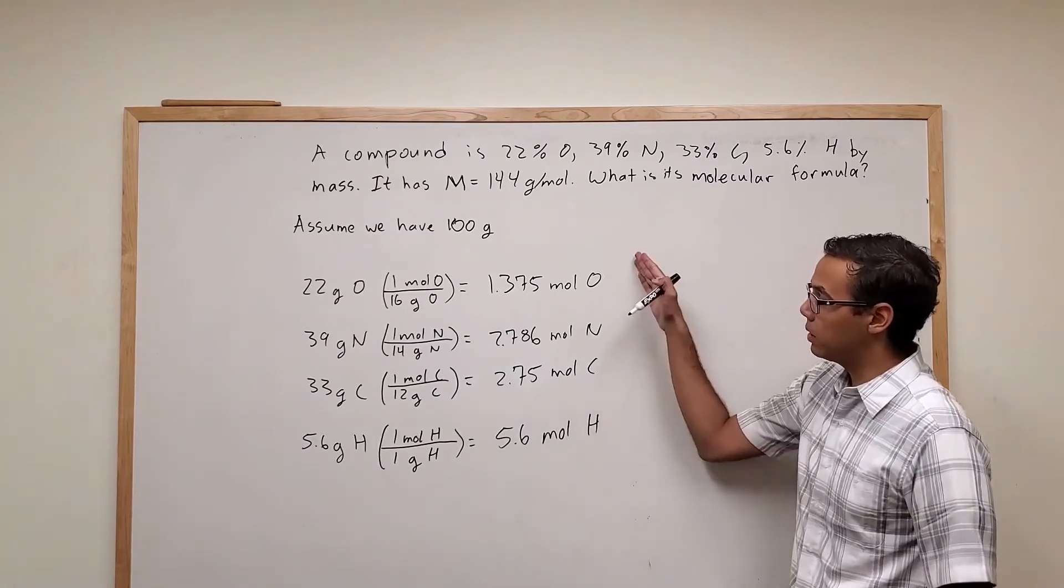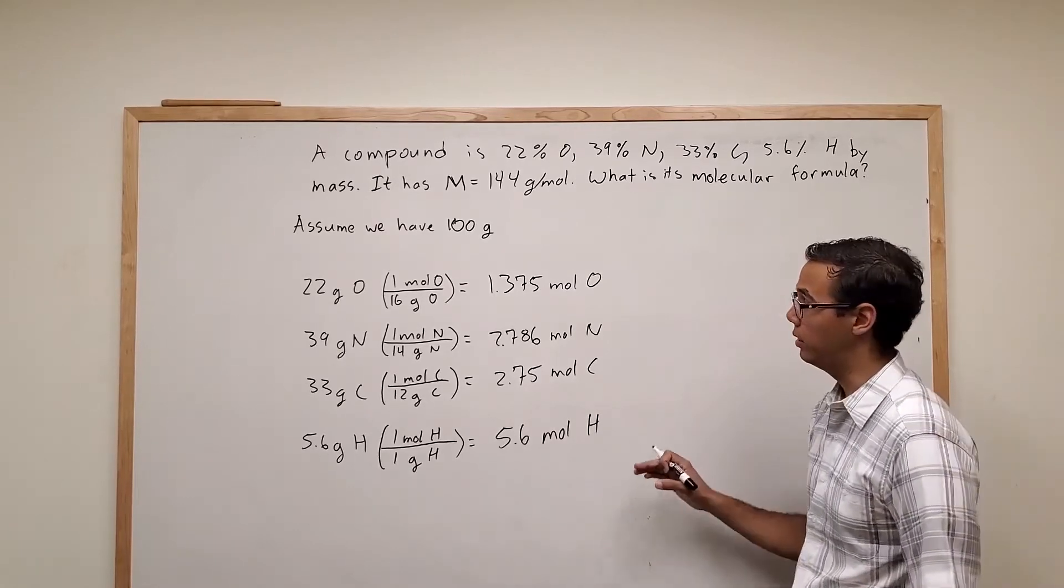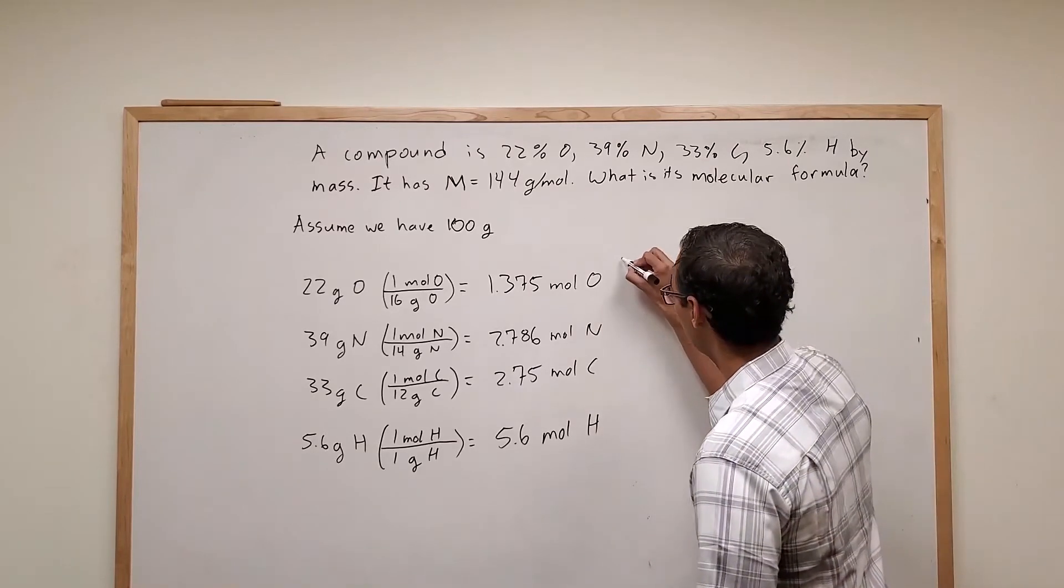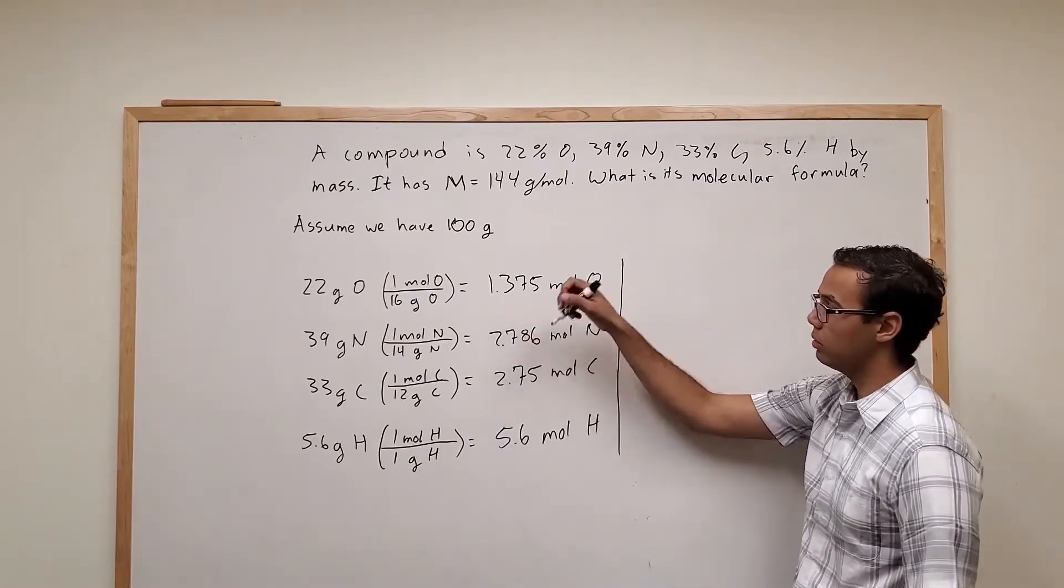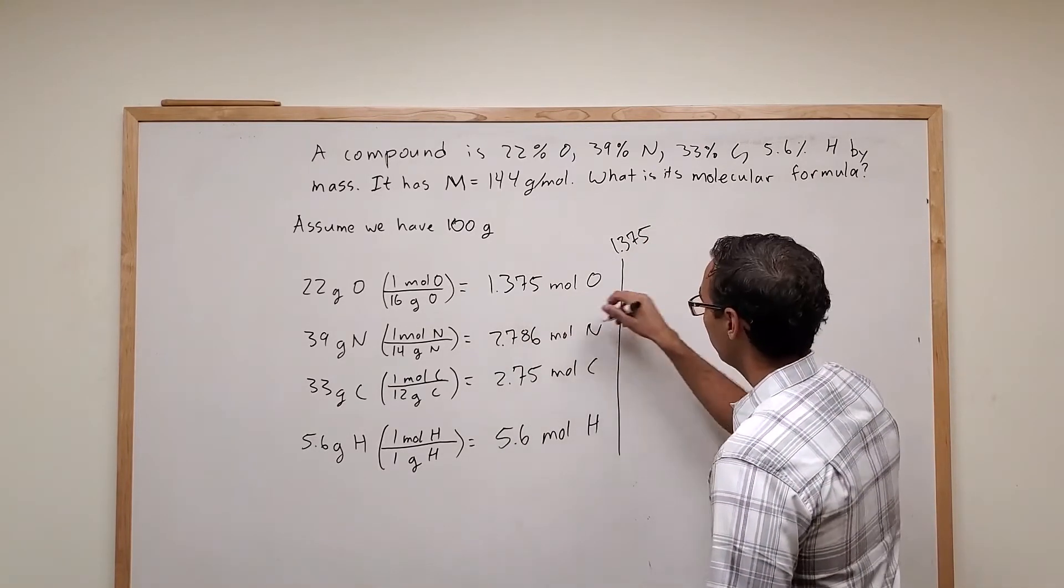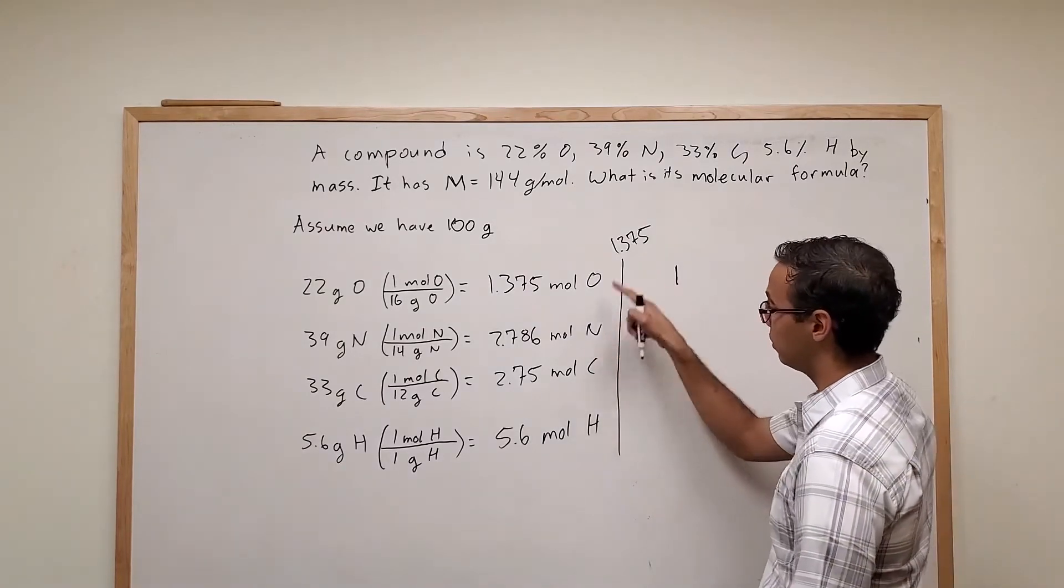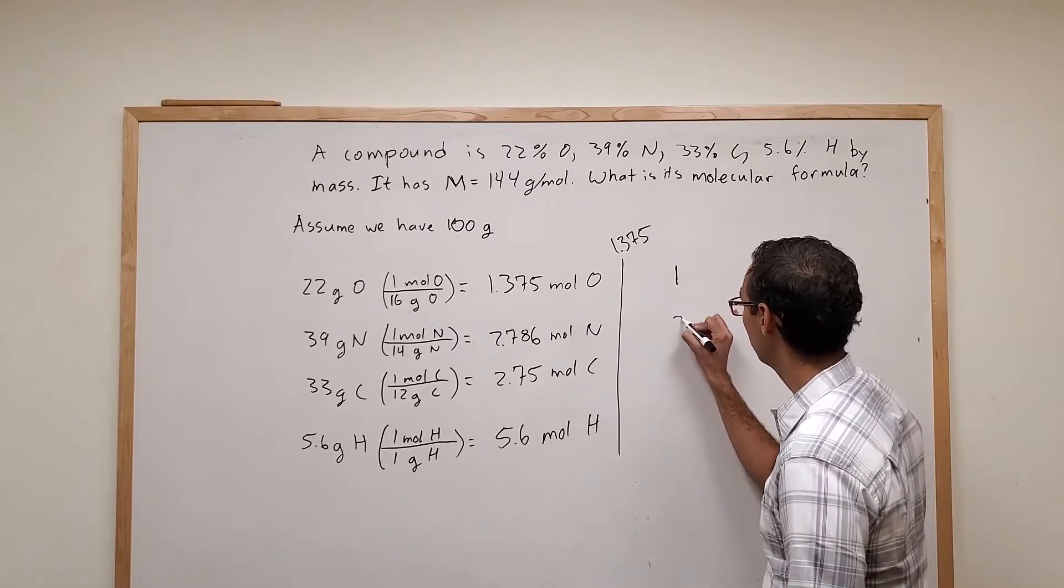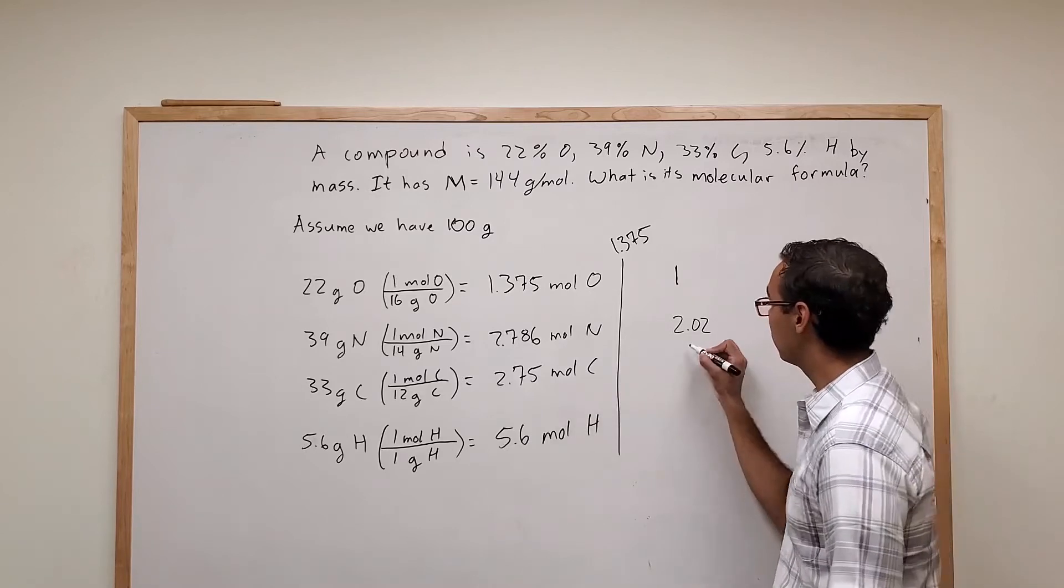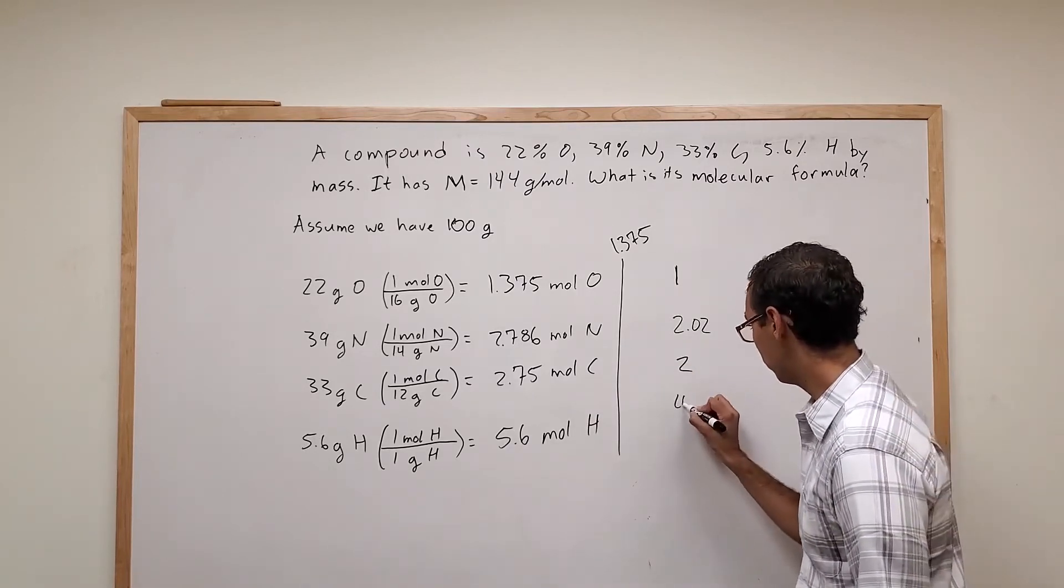Okay, so this next step is that we're going to simplify all this to try to get rid of as many decimals as possible. And remember the thing we're interested in is the ratios of these. So what we can do is come here, we're going to divide through by the smallest number, which is 1.375. Okay, so that's going to give us a 1 here. So we have 1 oxygen for every, if you plug that in that's going to give us a 2.02. Here it's going to give us 2 exactly, which is kind of nice. And then for hydrogen it's going to give us 4.07.